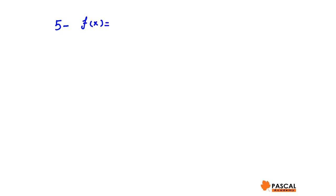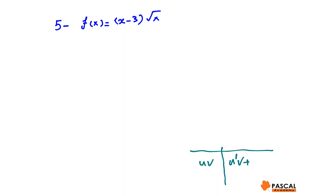In this video we continue reviewing derivative question number five: find the derivative of f of x equals x minus 3 times root x. We know the derivative of a product of two functions is the derivative of the first function times the second function itself, plus the derivative of the second function times the first function. Let's assume x minus 3 is our first function and root x is the second function.